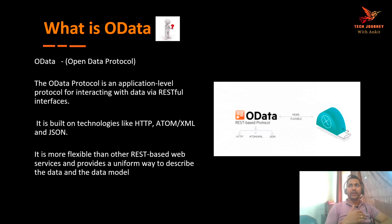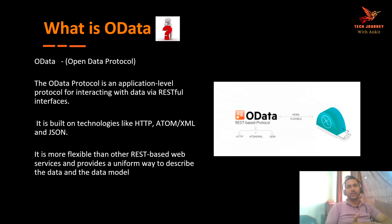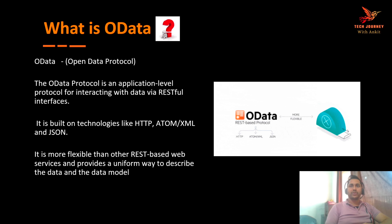In that metadata file we define what will be the primary key, what will be the rule to get the primary key, and in what way your data will be coming in or how you want to define your data model. Just for your understanding, OData means open data protocol — it is a REST-based protocol built on technologies like HTTP, XML, or JSON. Like most REST services, it uses both XML and JSON. The key point is it provides a uniform way to describe the data as well as the data model.